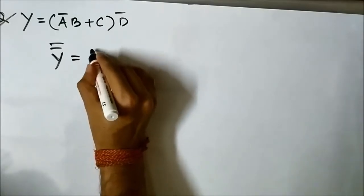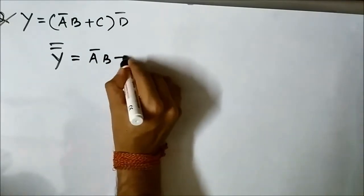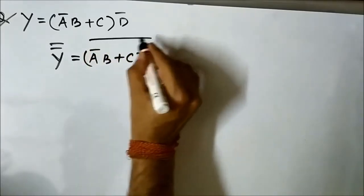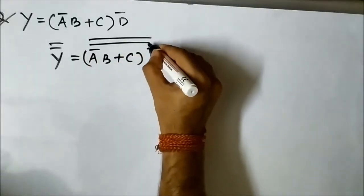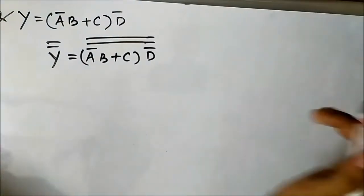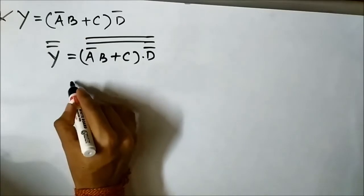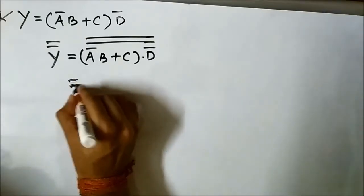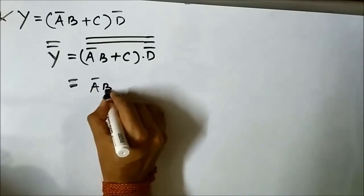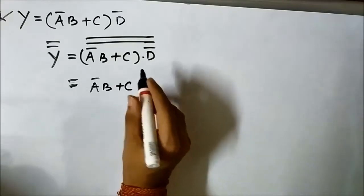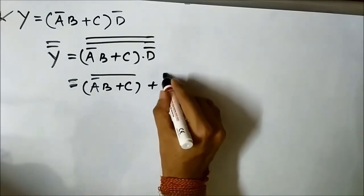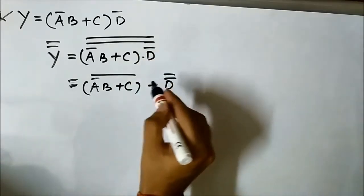Let us see what we get: A complement B or C D complement, double complement. Here we will convert this AND expression to OR. So it will become A complement B or C whole complement, or D complement complement. Here this AND got converted into OR.